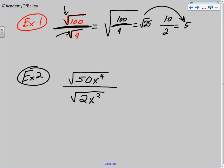Example number two, they're both square roots, so we will have 50x to the fourth on top and 2x squared on bottom. We know 50 divided by 2 is 25, and we also know x to the fourth divided by x squared is x squared.